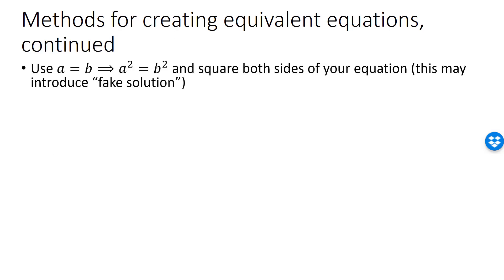Another strategy is to square both sides of an equation. For example, the equation √x equals 2 can be solved by squaring both sides, giving x equals 4. Note that squaring both sides may introduce fake solutions — numbers that are not solutions to the original equation.